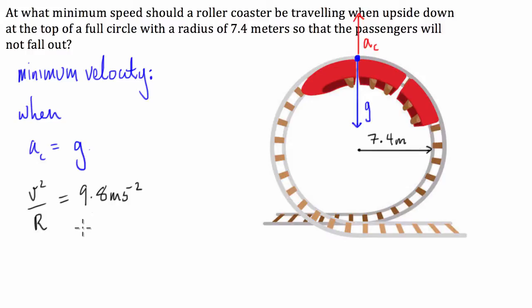Great. So, let's fill in what we know. We know that the radius is going to be equal to 7.4. Cool. So, we can just then go velocity squared on 7.4 is equal to 9.8.